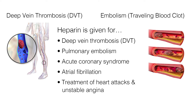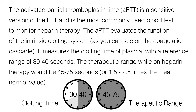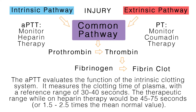Heparin acts immediately after IV injection and within 20 to 30 minutes after subcutaneous injection. The activated partial thromboplastin time, or APTT, is a sensitive version of the PTT and is the most commonly used blood test to monitor heparin therapy. The APTT evaluates the function of the intrinsic clotting system, as seen on the coagulation cascade. It measures the clotting time of plasma with a reference range of 30 to 40 seconds. The therapeutic range while on heparin therapy would be 45 to 75 seconds, or 1.5 to 2.5 times the mean normal value.